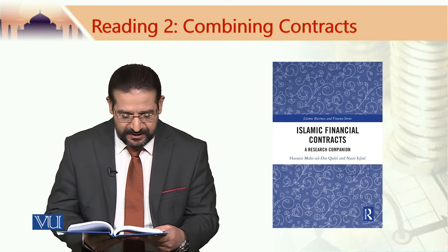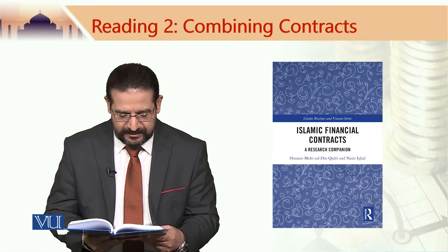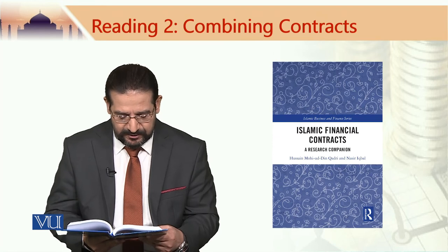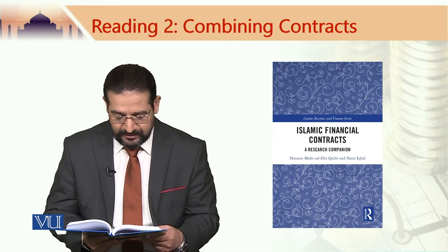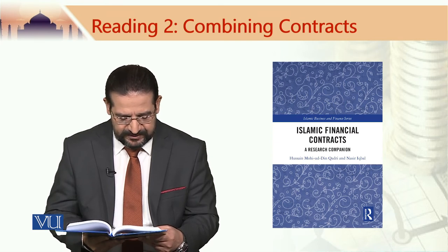Islamic banks may come across several transactions in which there could be interdependent agreements or stipulations that have to be avoided. The combination of some contracts is permissible subject to certain conditions. Bay (sale) and Ijara are two contracts of totally different impacts: while ownership and risk are transferred to the buyer in Bay, neither ownership nor risk transfers from the lessor to the lessee. It is necessary, therefore, that lease and sale are kept as separate agreements.